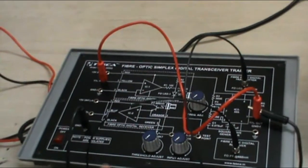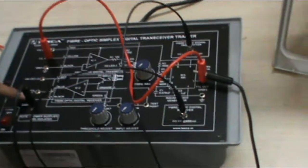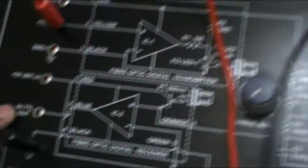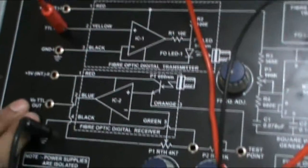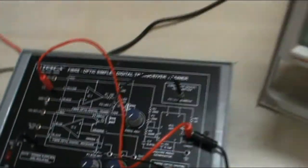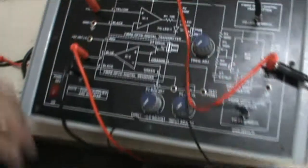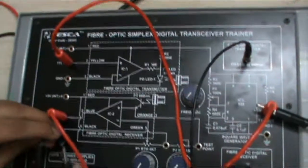Now set. Now also connect VO TTL out. This is the receiver part. Now connect VO TTL out to channel 2 of the CRO through another CRO cable. Red to the VO TTL out and black to the ground.